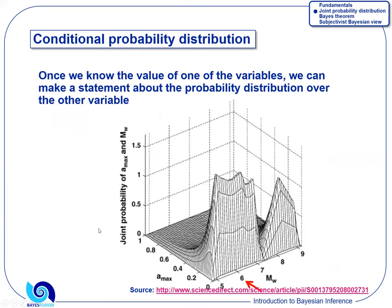Conditional distributions are another important concept. If you have a joint distribution over two variables and you pick the value of one variable, you can calculate the conditional distribution over the other one. You can imagine that as slicing the joint distribution with a sharp knife — for example, slicing at value six gives you the conditional distribution, which looks like a slice of the distribution in that direction. If you pick a different condition, you get a different distribution.